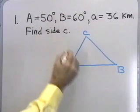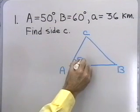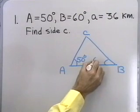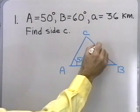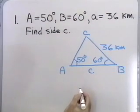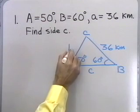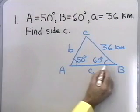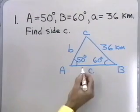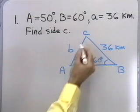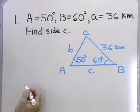Angle A is 50 degrees, so I'll put 50 degrees here. Angle B is 60 degrees, so here I'll put 60 degrees. Side a is 36 kilometers. So I'm left looking for side c, and also side b. In this problem, we're asked simply to find side c. To use the Law of Sines, I need to have a side and the angle opposite it.